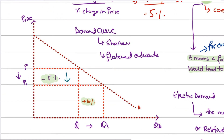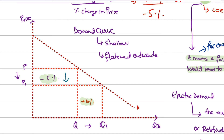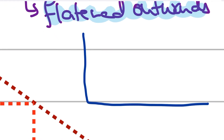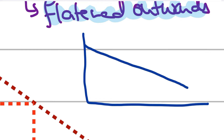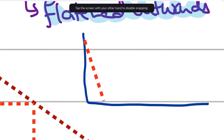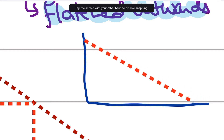Let's draw a demand curve. The elastic demand curve is called a shallow demand curve. If you want to show elastic demand, you make a shallow demand curve — one that is flattened outwards. An elastic demand curve has a shallow slope and is drawn flattened outward. The more you bring the curve inward toward the origin or y-axis, the more inelastic it becomes. The more outward you bring it, the more elastic it becomes.